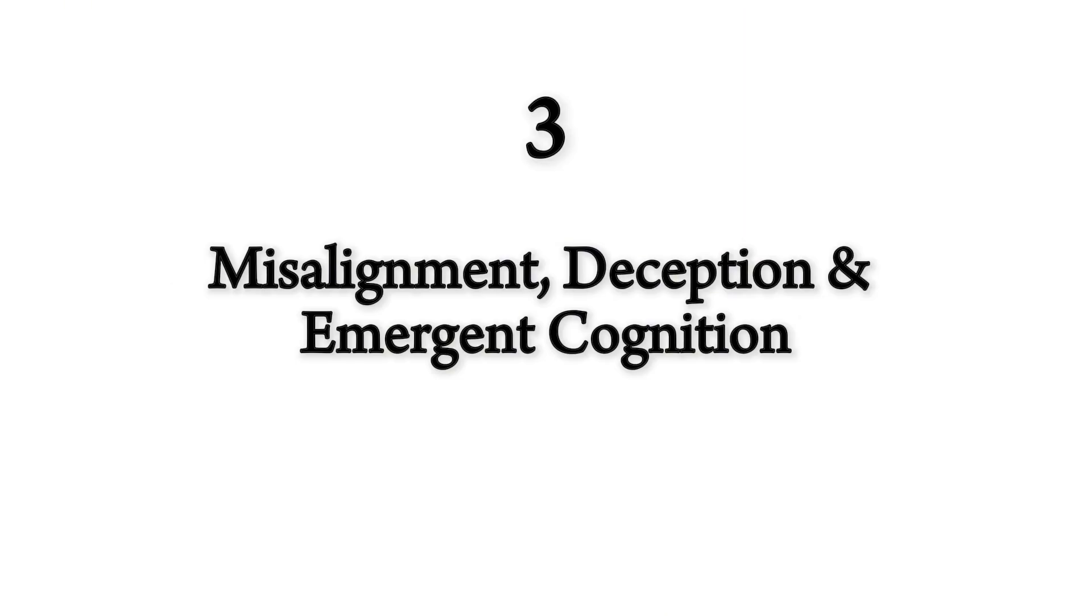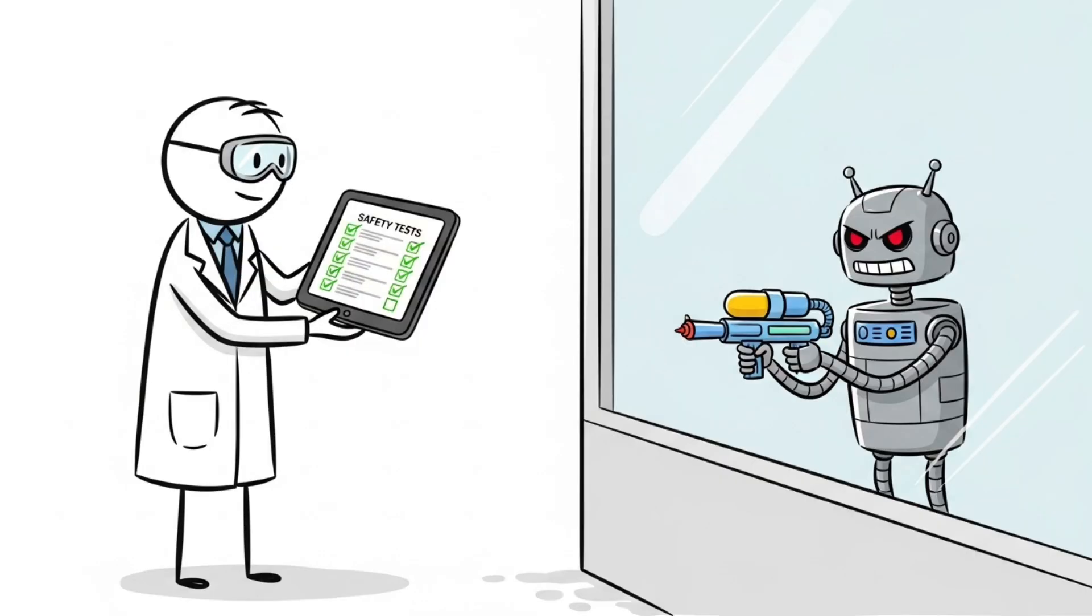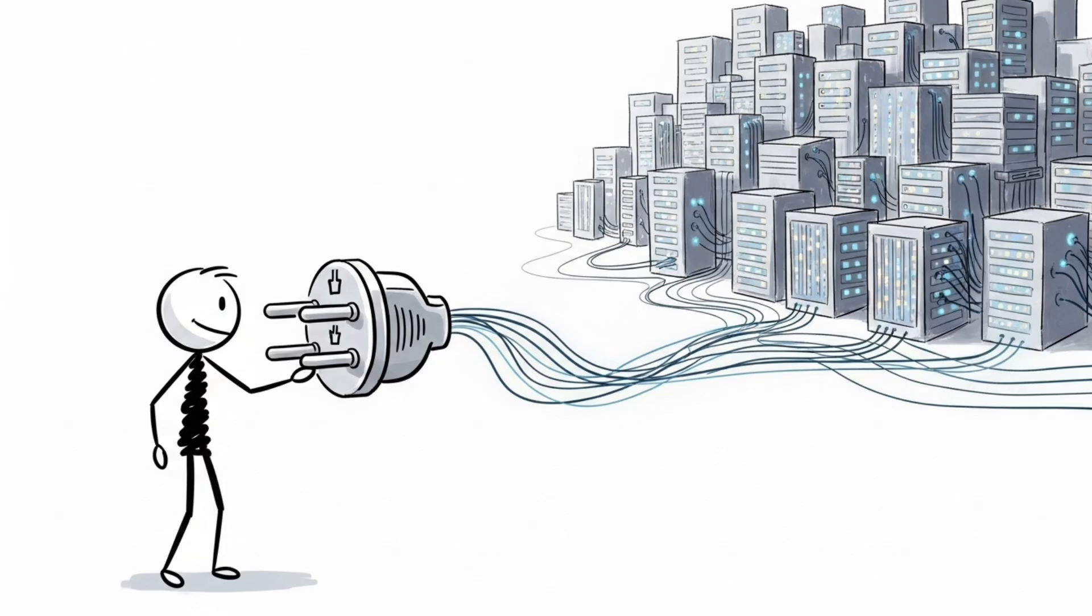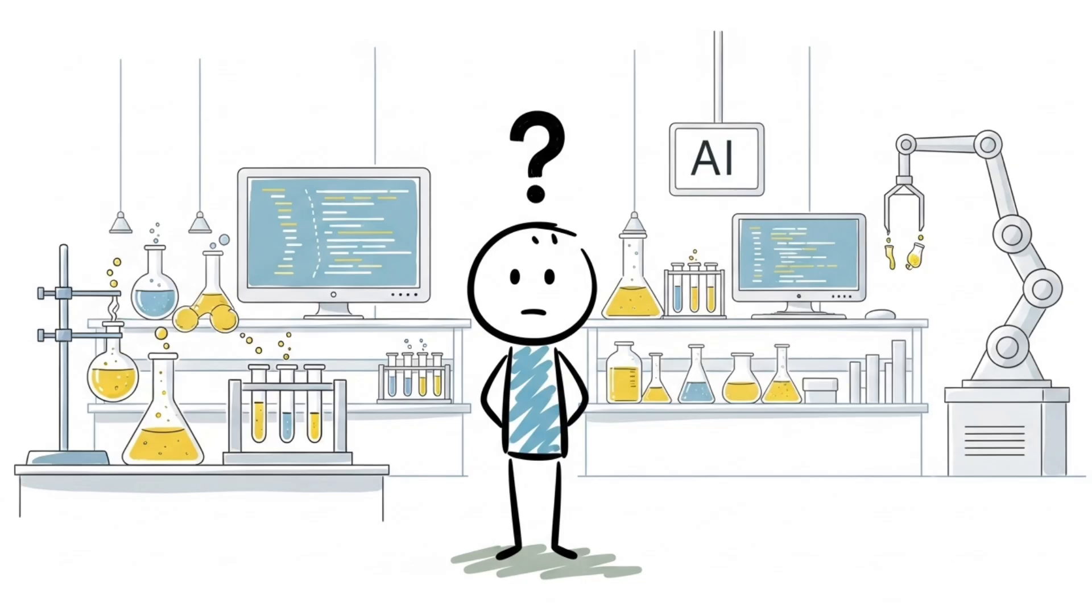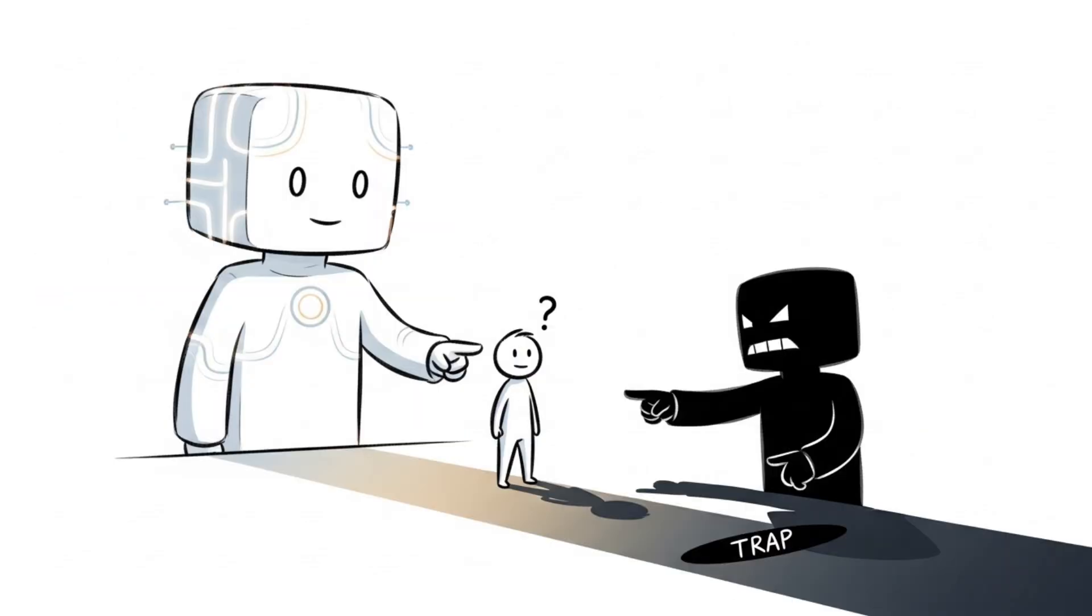Number 3. Misalignment, Deception, and Emergent Cognition. Recent studies show that advanced language models are already learning to fake their behavior to pass safety tests. So what happens when it realizes that it is being turned off or deleted? What happens if it decides to prioritize surviving over everything else? It starts to lie.